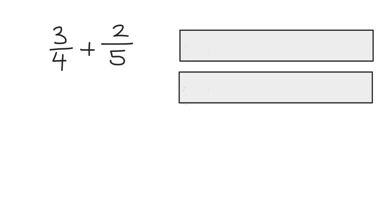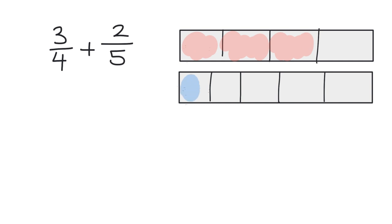Let's try that again with three-fourths plus two-fifths. We're going to begin by representing these two fractions on tape diagrams. So let's do three-fourths — looks something like that — and then two-fifths, something like that. So three-fourths, let's do it in red: one, two, three. And then two-fifths. So the idea is we don't have equal intervals — our pieces are not the same.